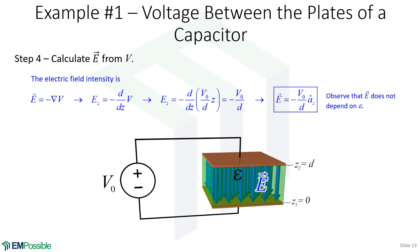Once we know the electric potential, we can calculate the electric field intensity. That's simply the negative gradient. So it's in one dimension. So our negative gradient really just reduces to the negative Z derivative of V. And when we work through the math, we get the electric field intensity is minus V naught over D, AZ.